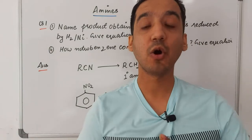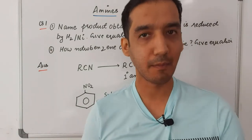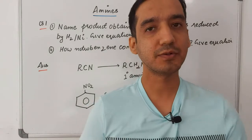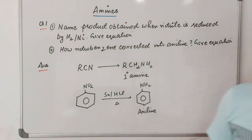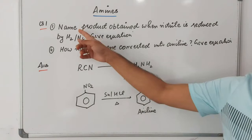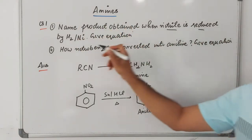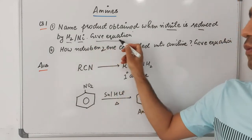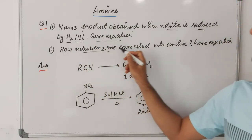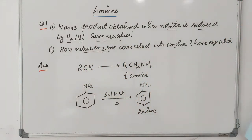Hello everyone, today we will talk about important questions from the Amines chapter. This video is for PU students and state board students. The first question is: name the product obtained when nitrile is reduced with H₂ in the presence of nickel, and give the equation. Second: how is nitrobenzene converted to aniline?